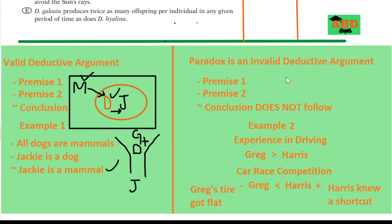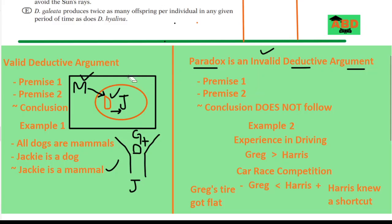However, what we're trying to understand is paradoxes, which is basically an invalid deductive argument. There are two premises — premise one, premise two, there can be more — but the problem is that the conclusion does not simply follow. And if I want to represent it with a graphical representation, I can use two shapes.